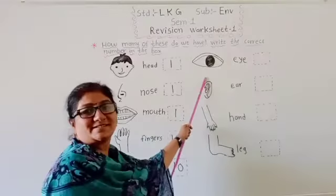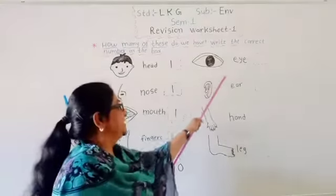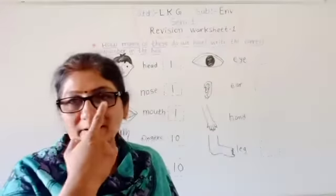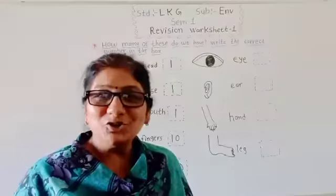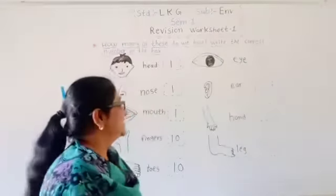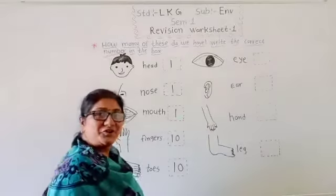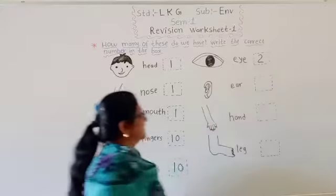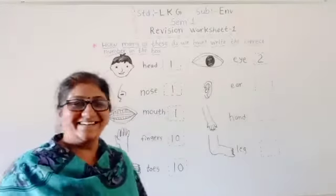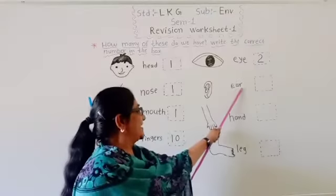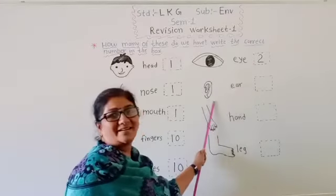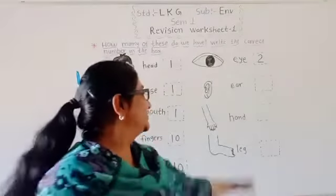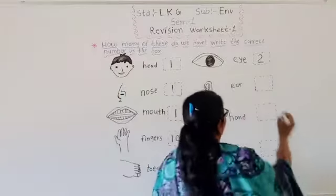Which picture is this? E-Y-E-S. How many eyes are there? Two. So here, write two. Which picture is this? E-A-R. Ear. Kitnay hai? How many ears are there? Two. So here, write two.